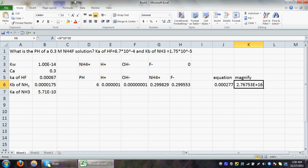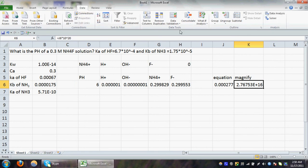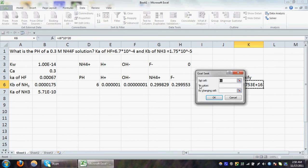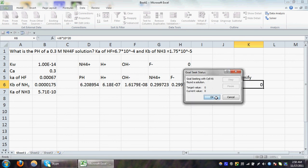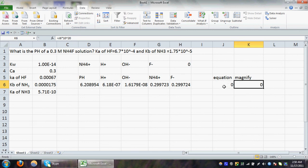Then we will go to the data, we will go to the what-if analysis, we will select the Goal Seek. Our set cell value is our magnified value, to the value of zero, by changing our initial pH. We hit OK. The Goal Seek has found our solution, our equation is zero, our magnified is zero, and our required pH is 6.20.